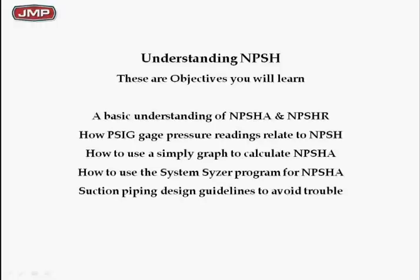We want to understand how gauge pressure at the suction flange relates to NPSH. We also have a simple graph method you can use to figure out what the NPSH available is — a graphical method you can hand out and send to people. We also have a new method in the System Sizer online computer program, which has a section on net positive suction head available. Last but not least, and probably most important: how do you stay out of trouble when designing cooling towers, condensate pumps, and pumping applications — making sure suction piping is designed properly to avoid NPSH problems.